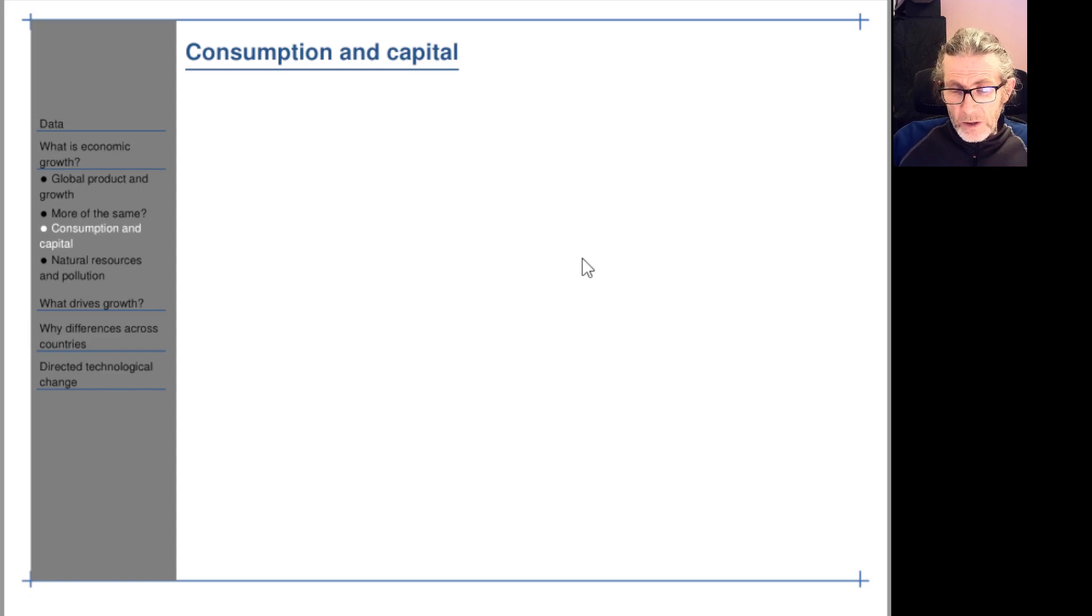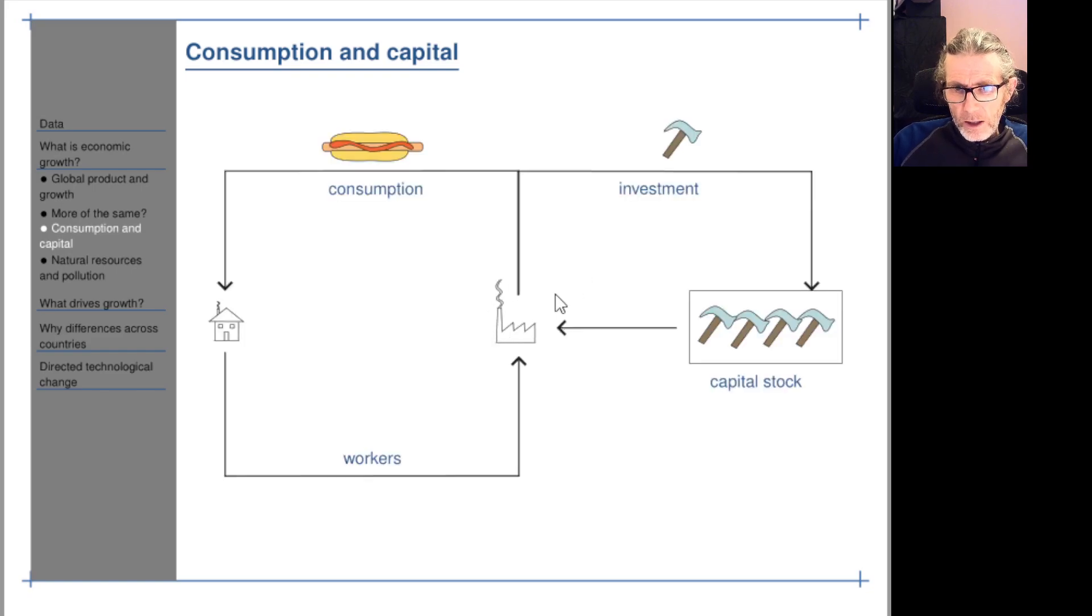But does everything we produce get consumed? Definitely not. Some of it gets invested in capital. So this is a picture of a very simple economy with households who send off workers to the production arena and what is produced can go in one of two directions. It can be consumed or it can be invested and what's invested goes into the capital stock which is then used to produce more stuff. So GDP is the sum of the value of these things. It's the whole basket of what's produced so it's not just consumer goods.